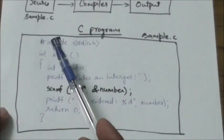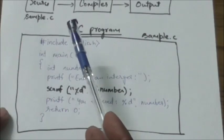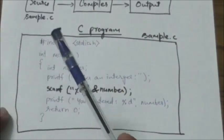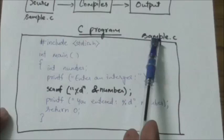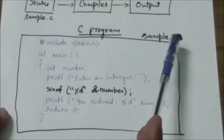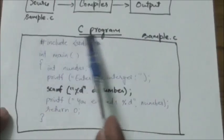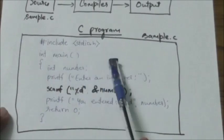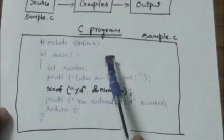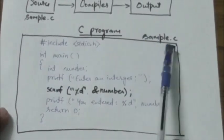C source files can be created by any text editor, and the filenames usually end with .c. As you can see here, this filename is sample.c.